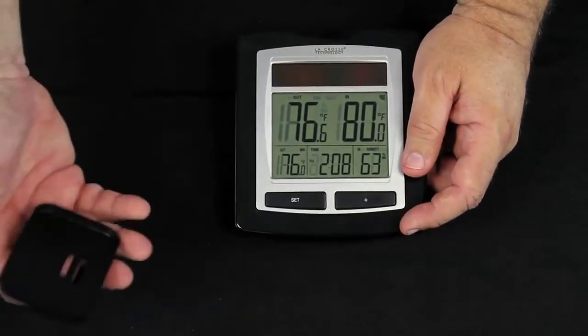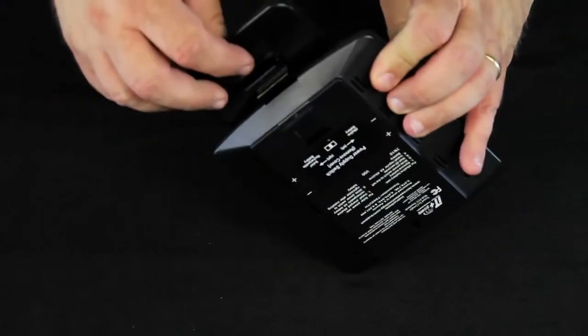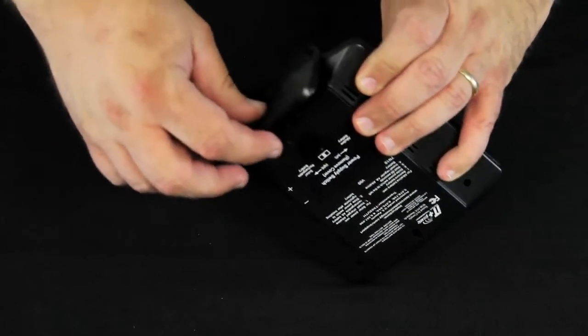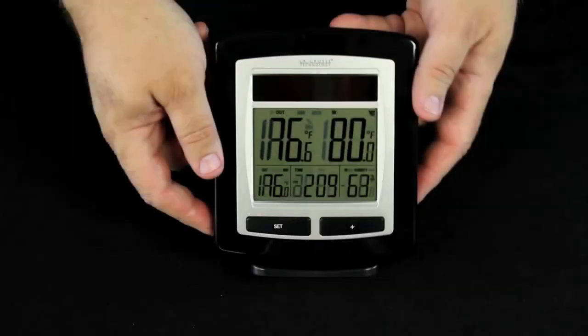The system also comes with a base. Installing the base is very simple. Simply put the short peg in, and snap it down, and the system base is set up.